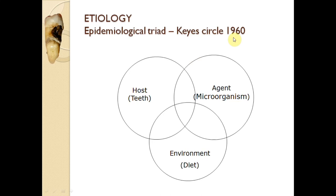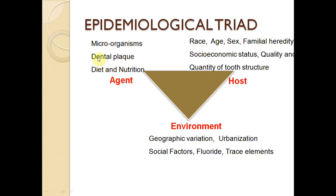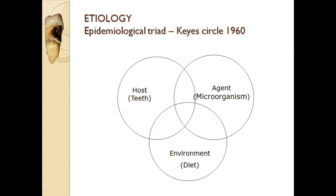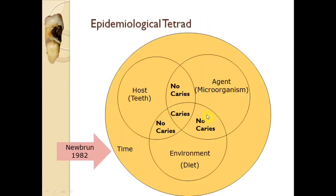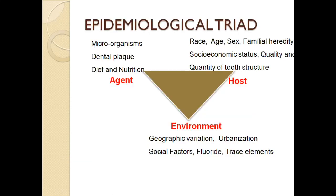This is the epidemiological triad by Keys in 1960. As we have learned, the epidemiological triad has three factors: host, agent, and environment. Host is the teeth, agent is the outside organism — the microorganism — and environment is the diet and many other factors. In agent factors we have microorganisms, dental plaque, diet, and nutrition. In host factors: race, age, sex, familial history, socioeconomic status, and quality and quantity of teeth. Environment includes fluoride, trace elements, social factors, geographic variations, and urbanization.